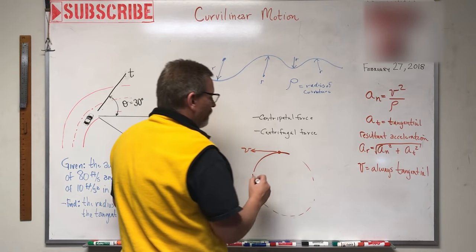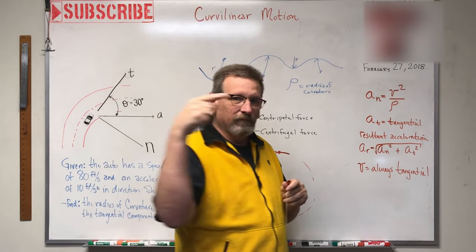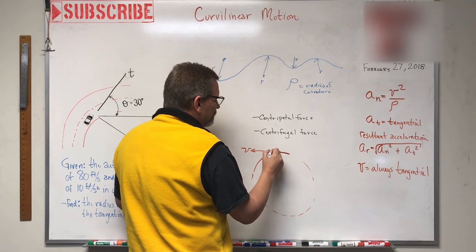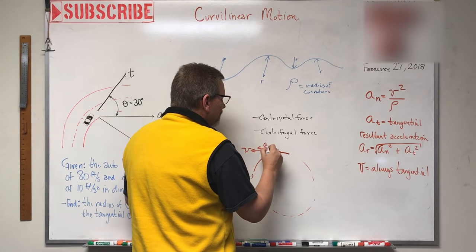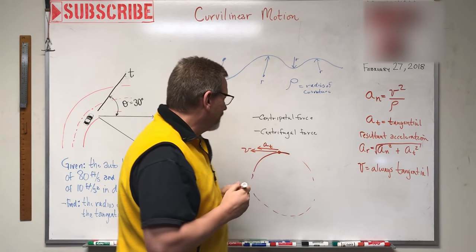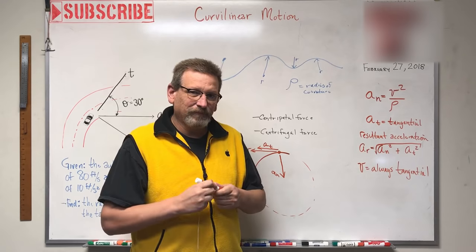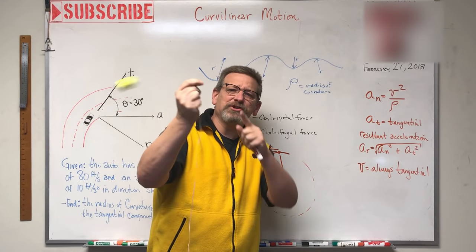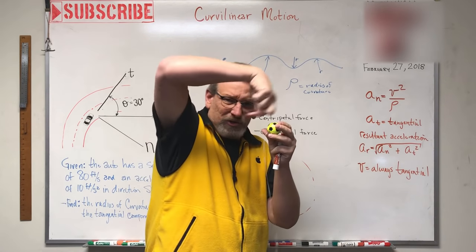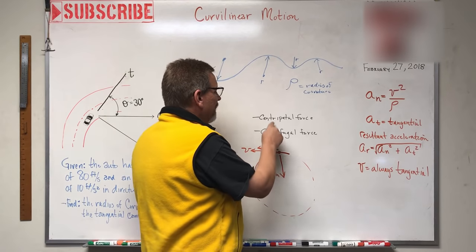If I'm spinning the ball around on a string and the string breaks, the ball will continue moving tangentially to the path. Acceleration also has a tangential component as the speed changes. But it also has a component that is less intuitive: it has an acceleration directed toward the center, called normal acceleration. You can feel this — the ball creates tension in the rope, and the faster I swing it, the harder I have to hold it.